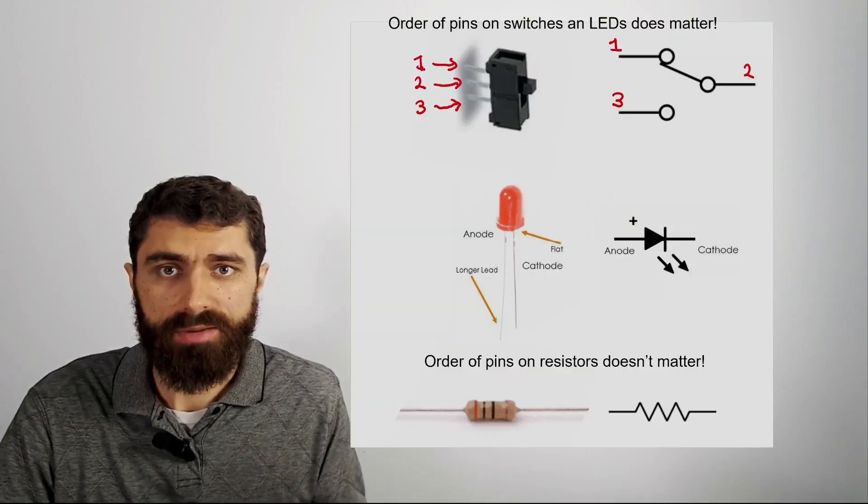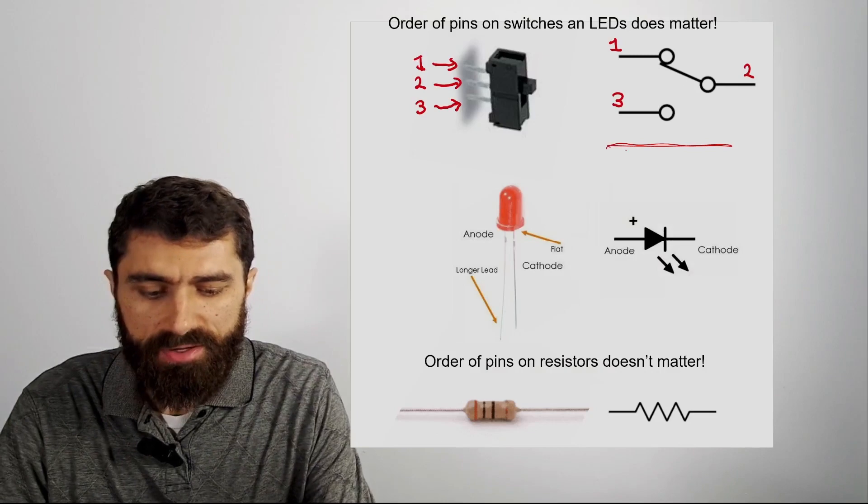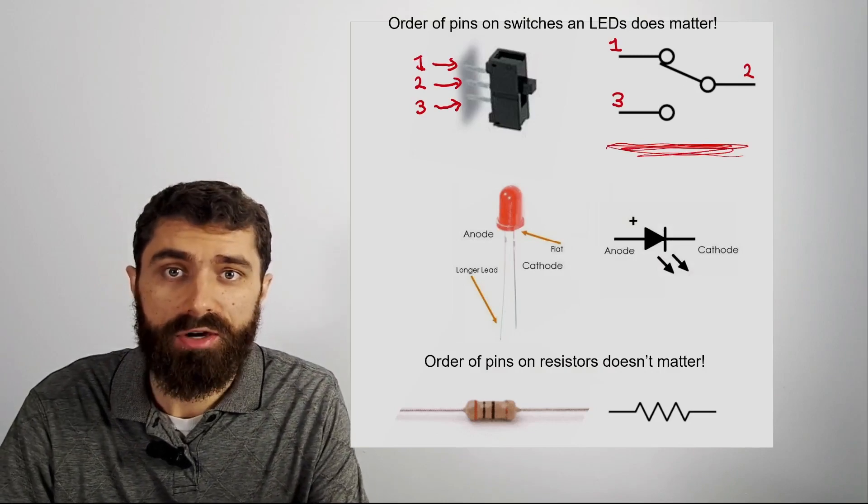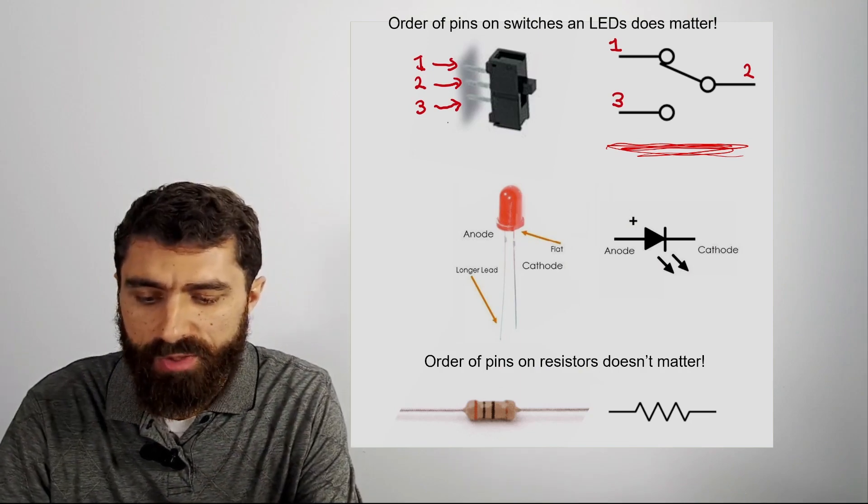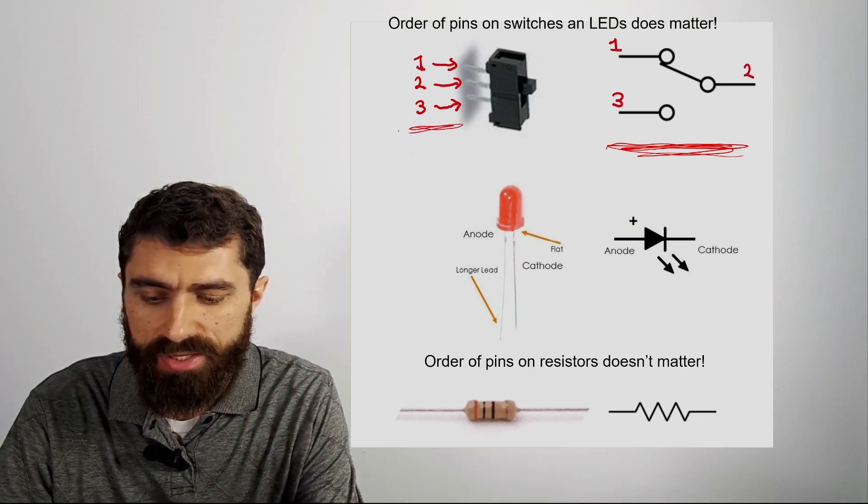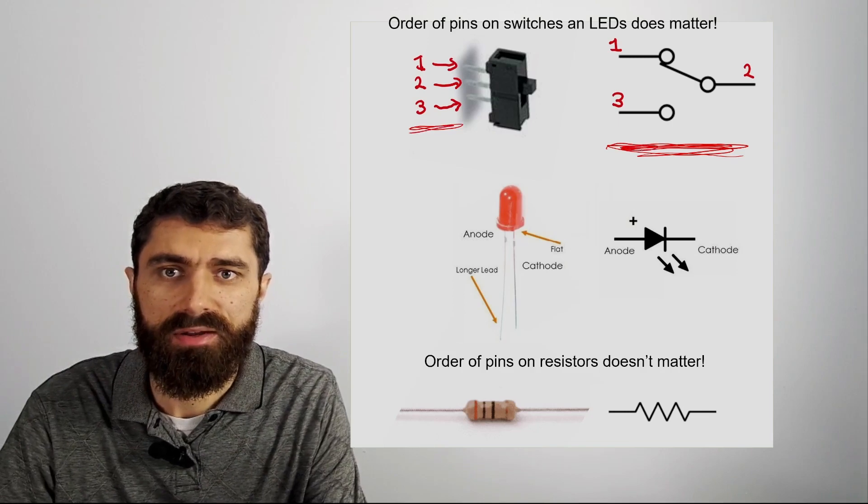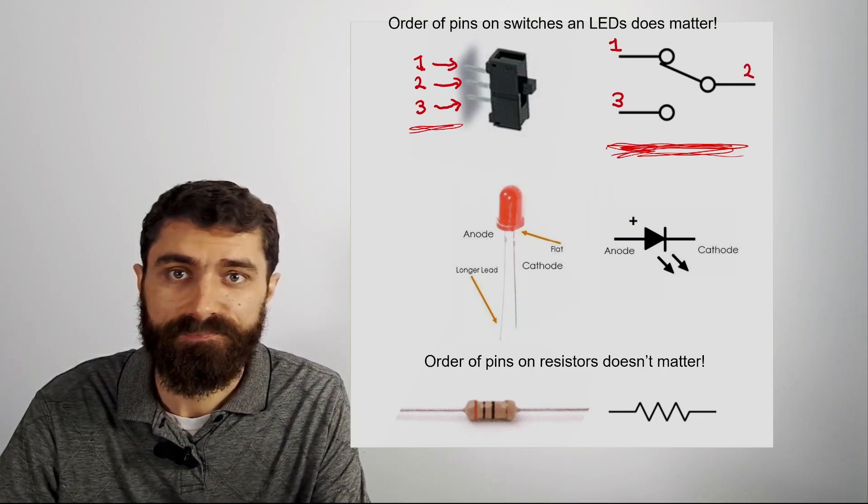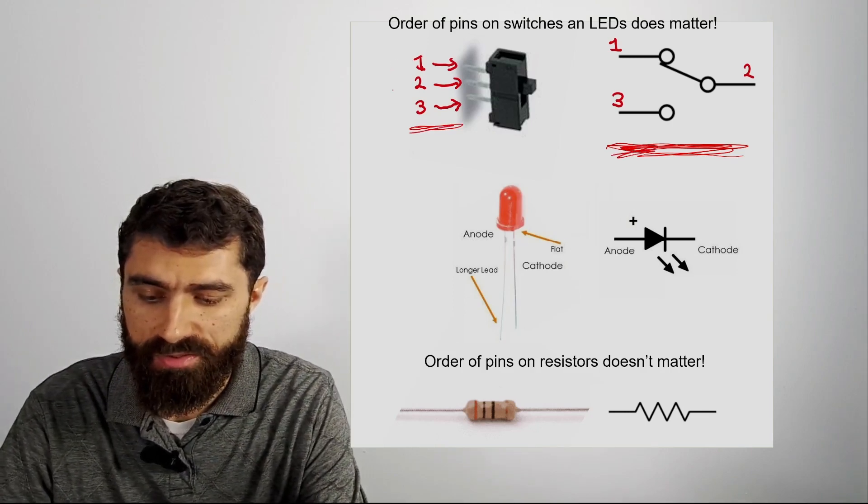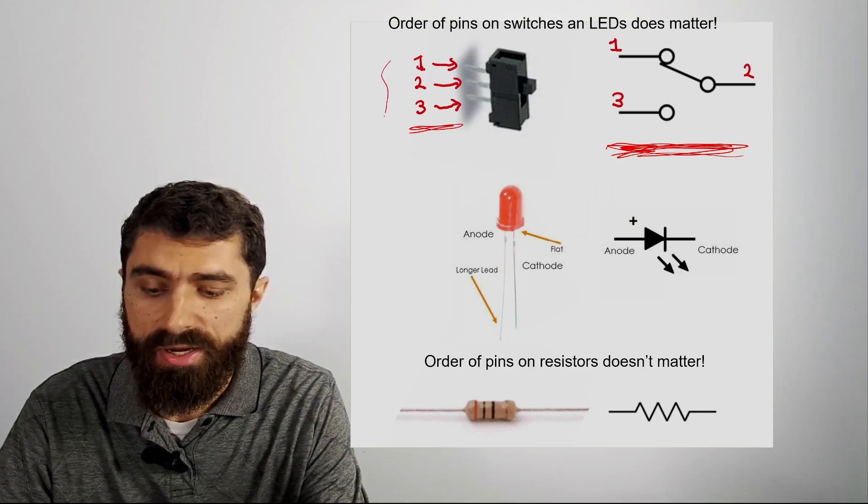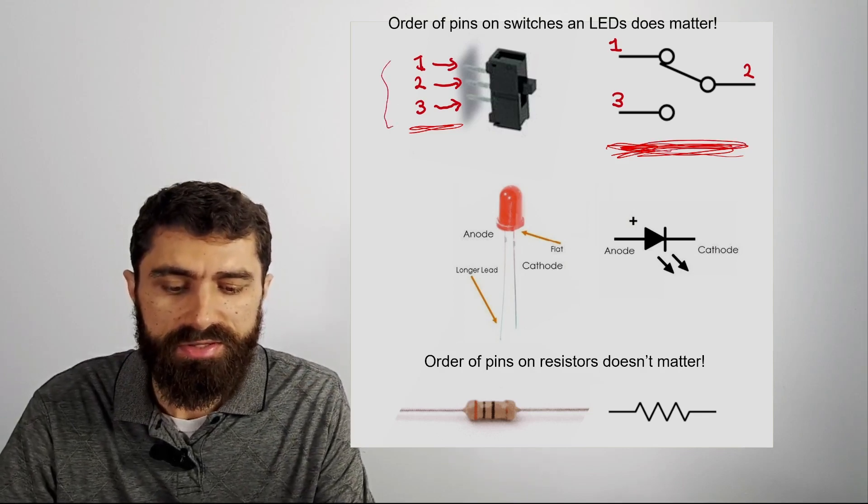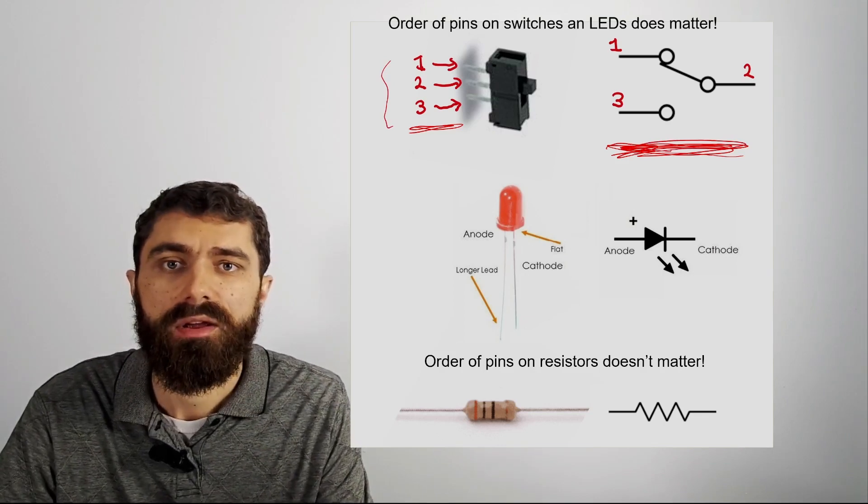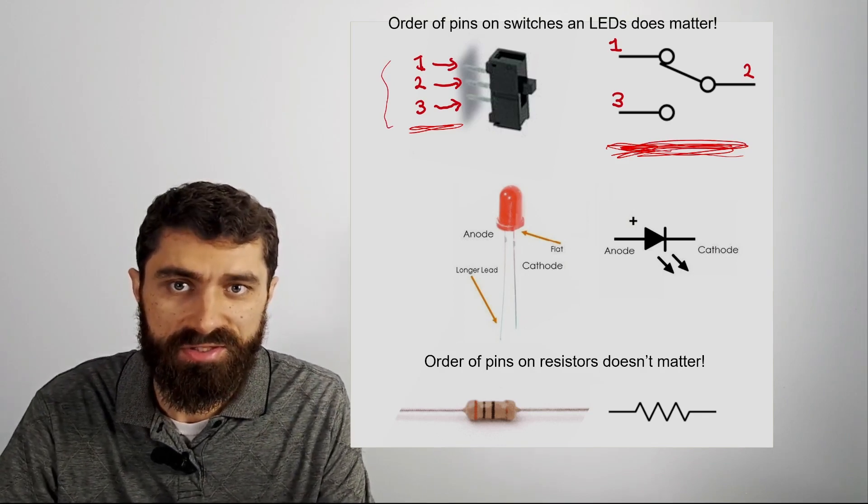So for example, here we have a symbol for a switch here. And it's important that you get the physical switch out and make sure that you understand which pin corresponds to which pin on the symbol here. So for example, the pins here 1, 2, and 3 on your switch correspond to the pins 1, 2, and 3 on this circuit schematic symbol.